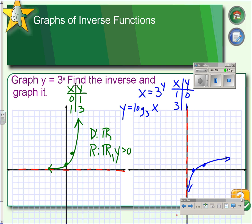So if we switch x and y, then the domain to the logarithmic function would be the range to the exponential function. So the domain is all real numbers where x is greater than 0, as we can see from the asymptote. And the range is just all real numbers.